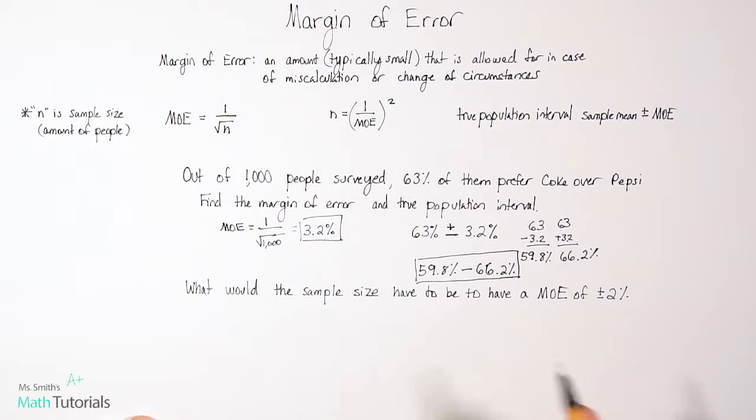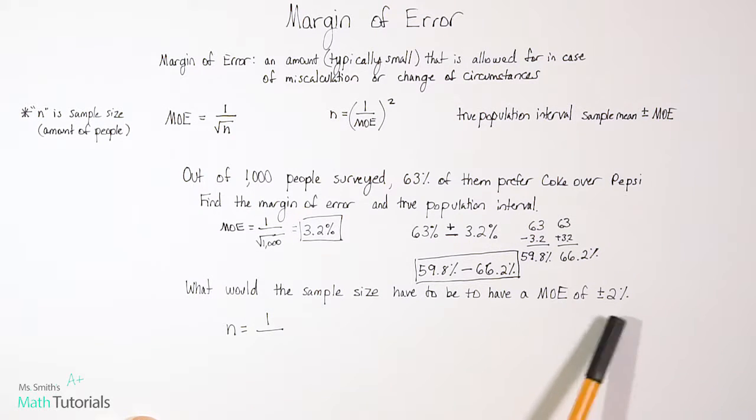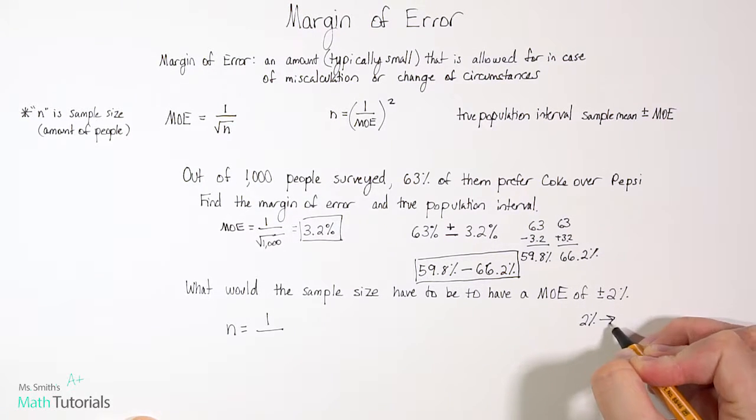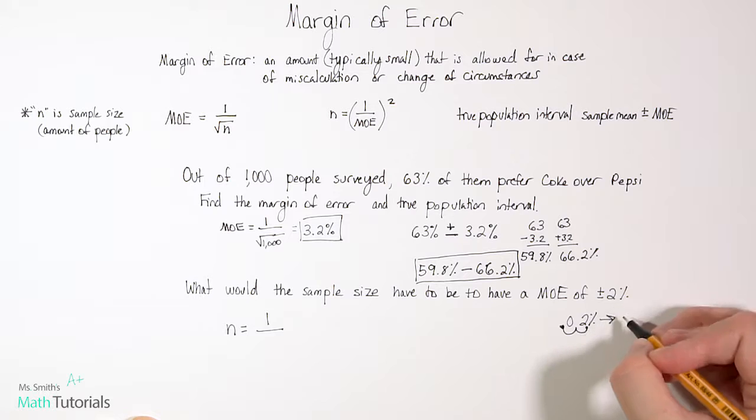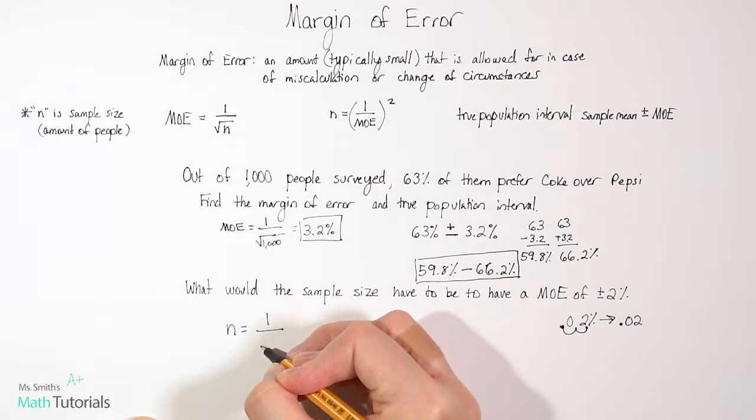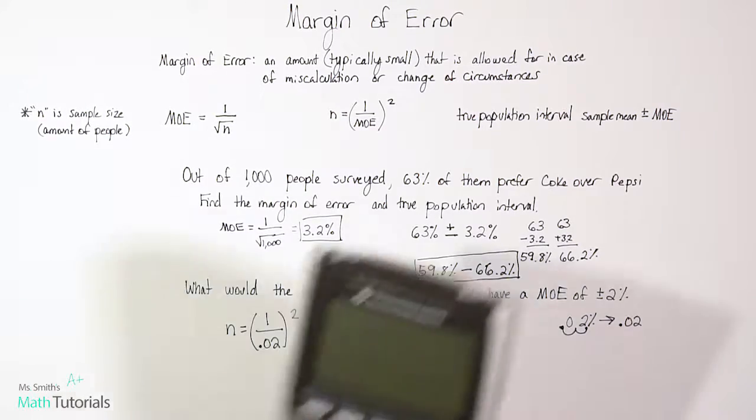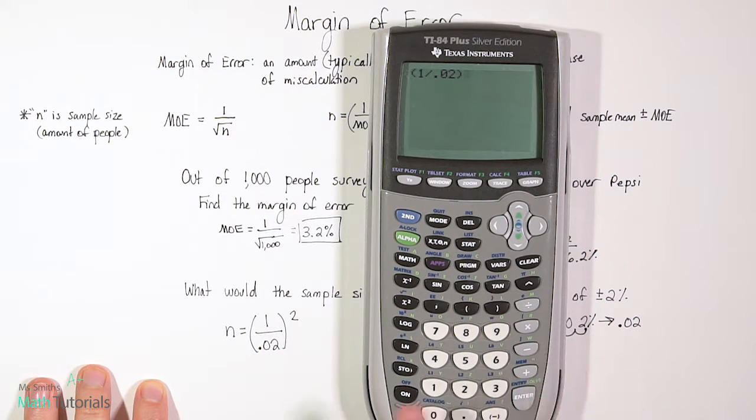Let's use this formula right here to find sample size. Remember, n is sample size. We want to know n. And we've got 1 over our margin of error of 2%. Now we can't put a percent in a fraction. We're going to have to take that 2% and turn it into a decimal. So remember, we take the decimal that's there and we move it over two places and put in a zero placeholder. So we've got a 0.02. So 1 over 0.02. And then we need to square that. So let's go ahead and type that into the calculator. So we've got 1 divided by 0.02. And that whole thing is squared. And that gives us a sample size of 2,500.